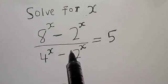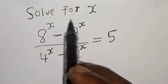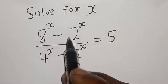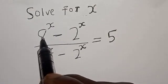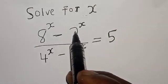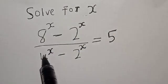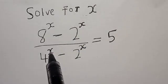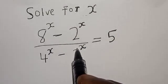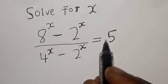Hi everyone, welcome to my class. In today's class we want to find the value of x from this given equation: 8 raised to power x minus 2 raised to power x, divided by 4 raised to power x minus 2 raised to power x, is equal to 5.